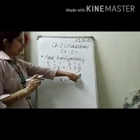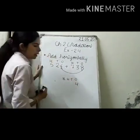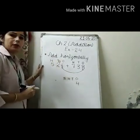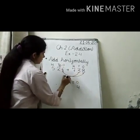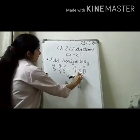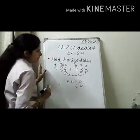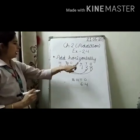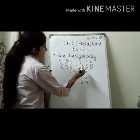First, add the ones place: 6 plus 8 equals 14. Write 4 under the ones place and carry over 1. Now add the tens places: 2 plus 3 equals 5, plus the carry of 1 equals 6. Write 6 under the tens place.